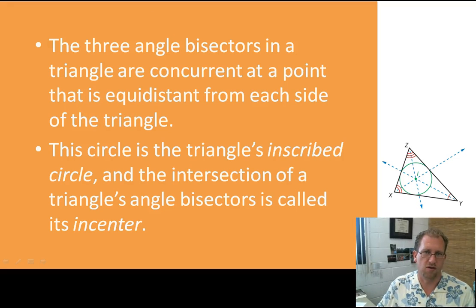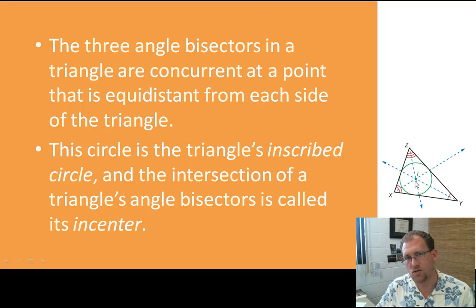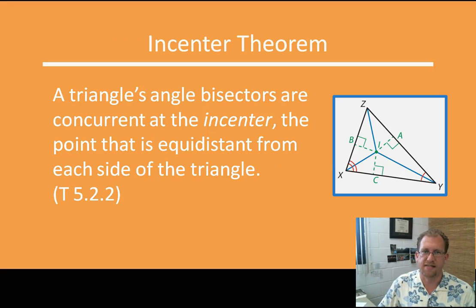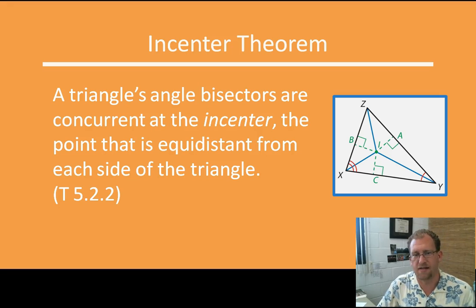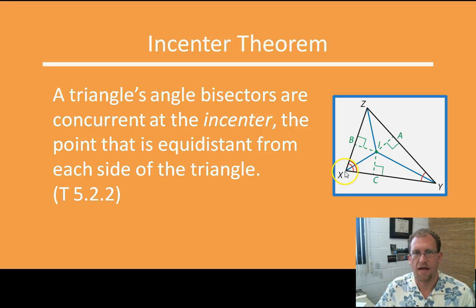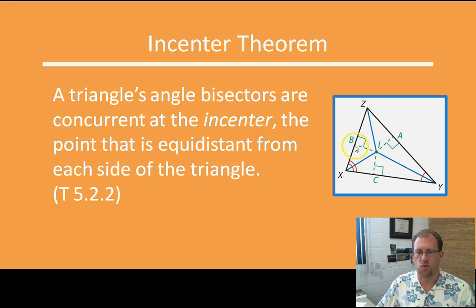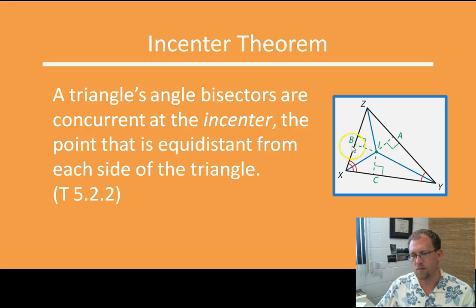Similarly to how the circumcenter was the center of a circumscribed circle, we now have the incenter — the center of an inscribed circle. The incenter theorem states that a triangle's angle bisectors are concurrent at the incenter, the point that is equidistant from each side of the triangle. The angle bisectors are shown here, and they converge at point I, which is the same distance from sides A, B, and C — the shortest distance to each side. So we call that the incenter because it's the center of an inscribed circle.